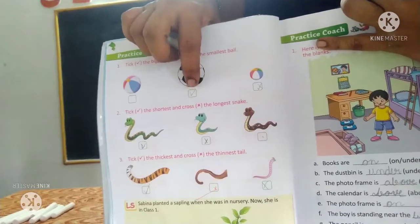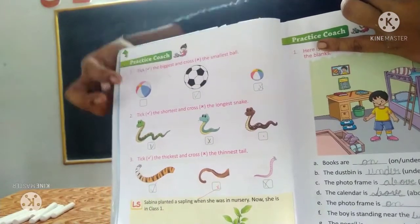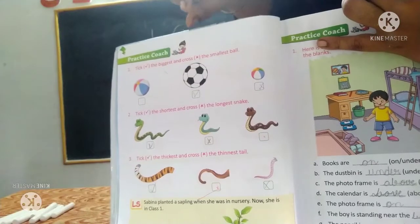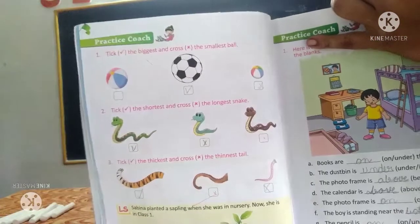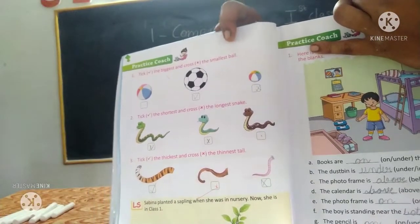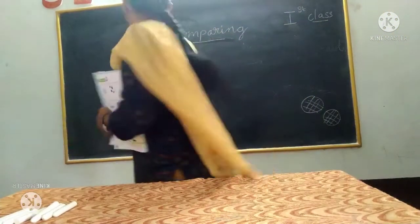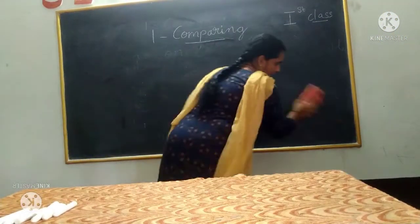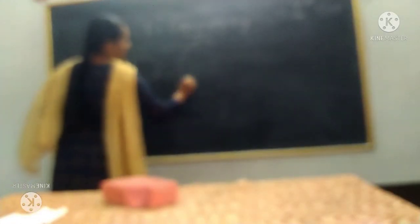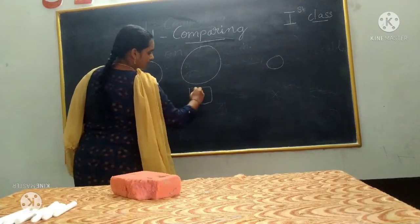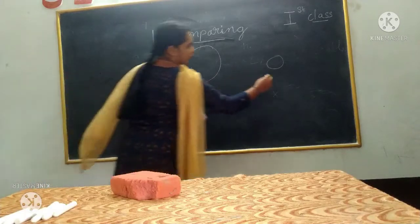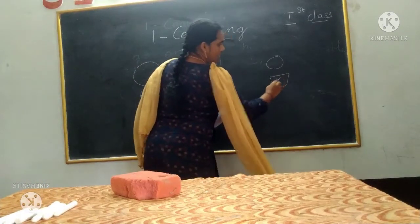They gave you boxes below the balls. Tick the biggest ball — tick it in the box. Next, cross the smallest ball. They gave you a medium-sized ball, a biggest ball, and a smallest ball. Tick the biggest and cross the smallest.